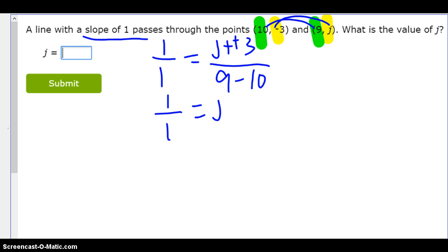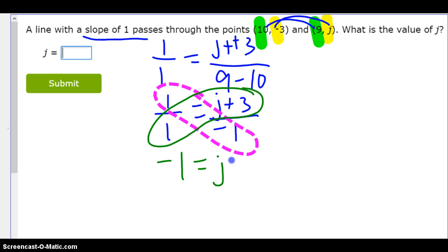So if I rewrite that, I get 1 over 1 equals J plus 3 all over negative 1. Now, again, you might see something really super fast you could do. If not, here is a system that always works. 1 times negative 1. That is negative 1. Then 1 times J plus 3. 1 times J is J. 1 times 3 is 3. So just J plus 3. Okay. How do I undo that? Minus 3. Minus 3. So negative 4 equals J.